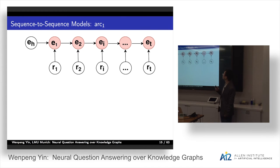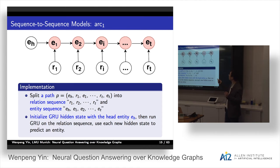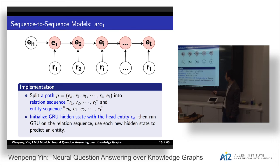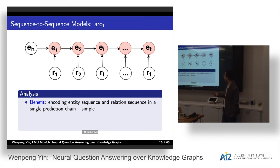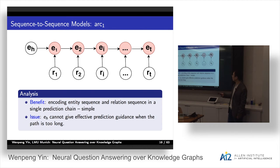As a potential solution, we choose to use a gated recurrent neural network like GRU or an LSTM model to do the composition and prediction over the fact sequence. This is our first sequence-to-sequence model. It splits a path into a relation sequence and an entity sequence. We initialize the GRU hidden state with the head entity, then run the GRU on the relation sequence and predict each entity at each step. The red node means the error between the predicted one and the ground truth.